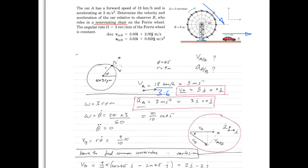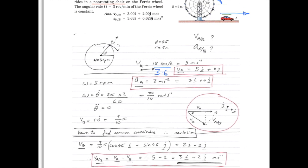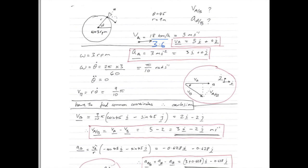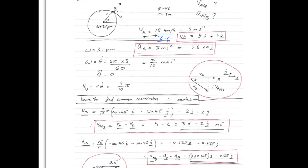So VB is equal to the radius, which is 9 meters, times π over 10, so you have the expression 9 over 10 times π meters per second. And from there, it's simply a case of adding these two vectors.